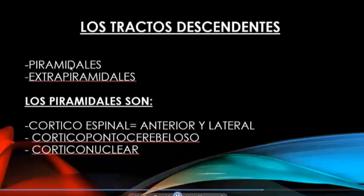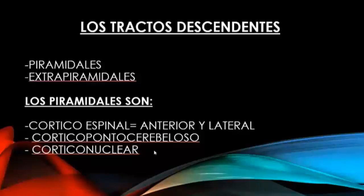The descending tracts are pyramidal and extrapyramidal. The pyramidal corticospinal can be anterior or lateral or anterolateral, and all are crossed. Formerly it was called direct pyramidal and crossed pyramidal. Another part of the pyramidal system is the corticopontocerebellar that is related to tone and equilibrium.